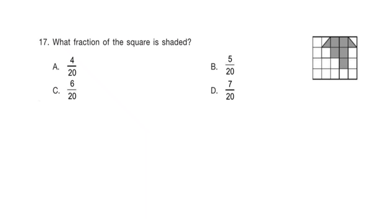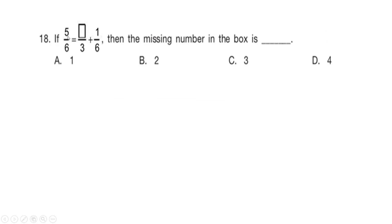All the answer options have the same denominator of 20, so the total small boxes are 20. Counting the completely shaded boxes: 1, 2, 3, 4, 5 are fully shaded, and the two partial ones combined give one more shaded block, making 6 complete shaded boxes. Hence the answer is option C: 6/20.